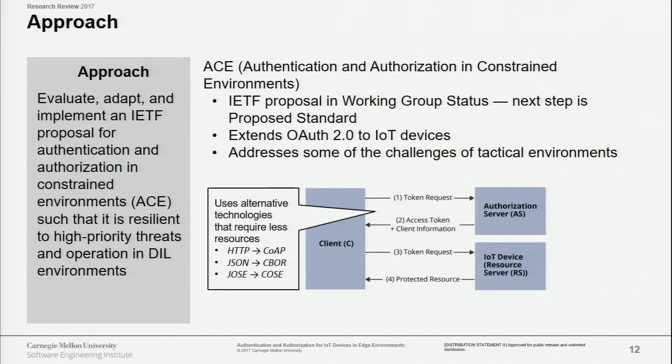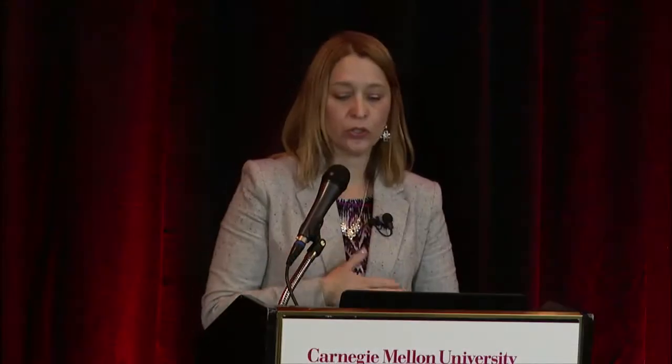As noted in the diagram, OAuth and ACE rely on a third-party authorization server. When a client wants to access a resource — in this case an IoT device — it goes to the authorization server and requests a token to access that resource server. The authorization server validates the client credentials and issues a token. The client then presents that token to the resource server, which validates it and provides the requested information.